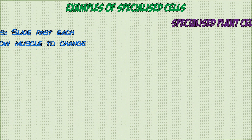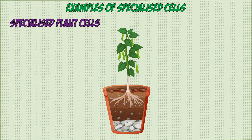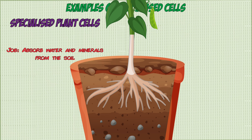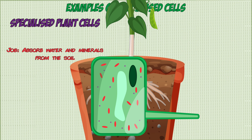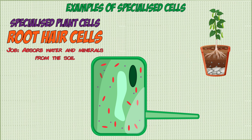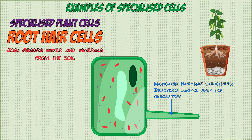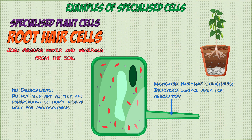Now let's look at some specialized plant cells. Plants have roots that grow underground to absorb water and minerals from the soil. These roots are made of specialized cells known as root hair cells, which have elongated hair-like structures that stick out to increase their surface area, making absorption more efficient. Root hair cells do not contain any chloroplasts because their job doesn't involve photosynthesis — they're found underground and never receive sunlight.